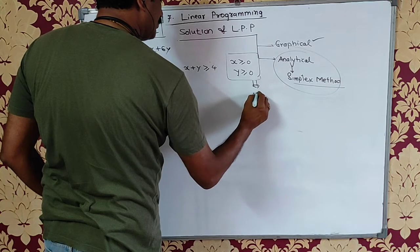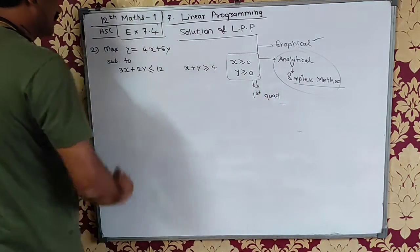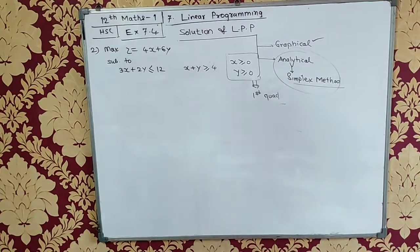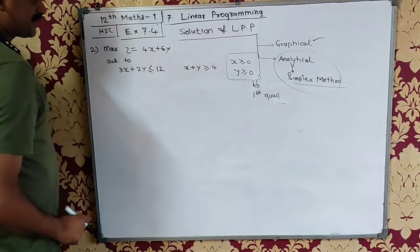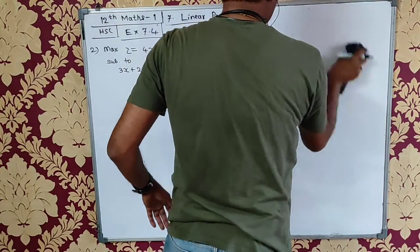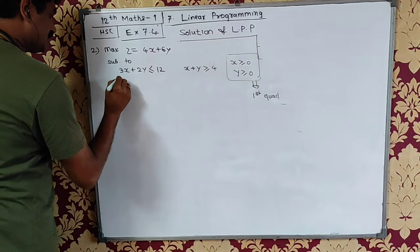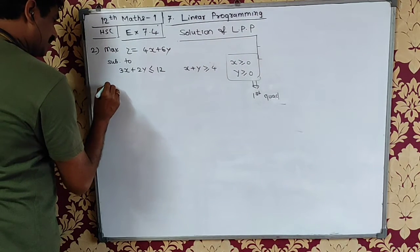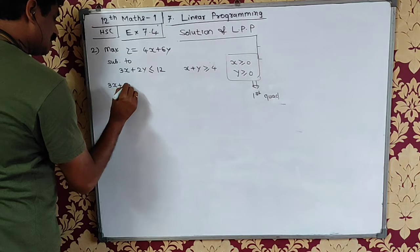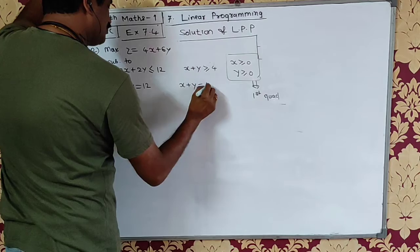Now this means our solution is only in the first quadrant. What are the steps? The steps are: first I will convert the inequality into equation. So the equation is 3x plus 2y equals 12 and x plus y equals 4.